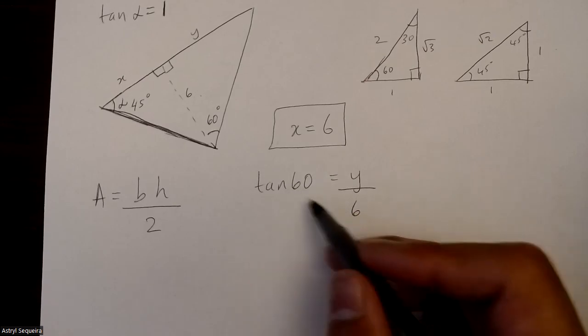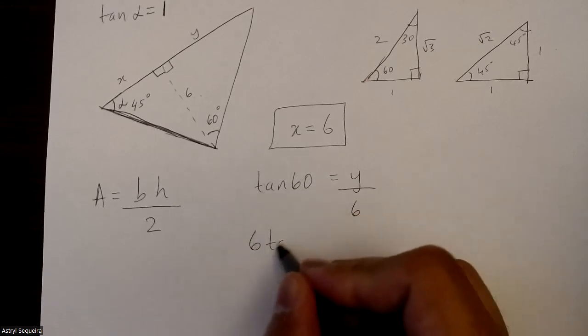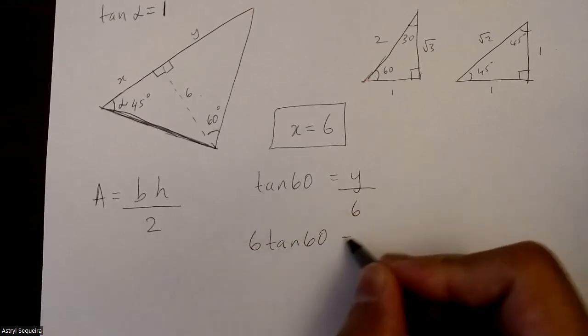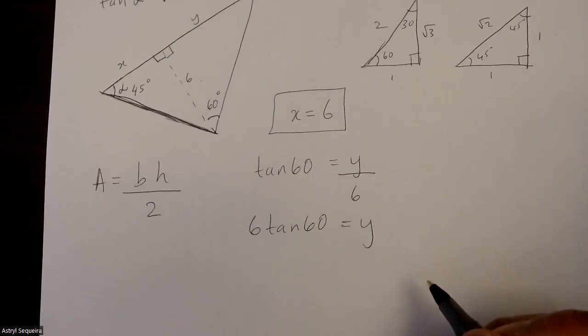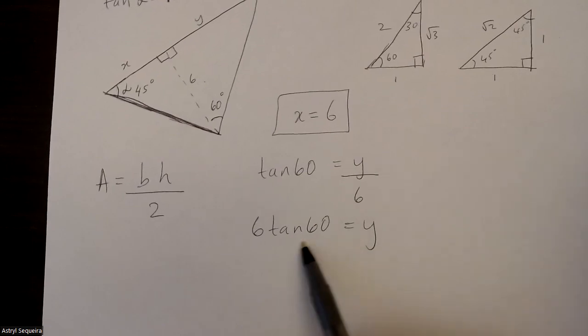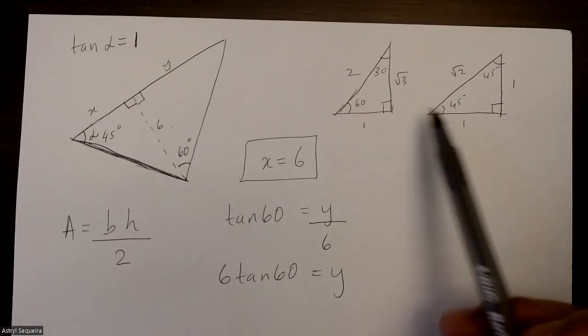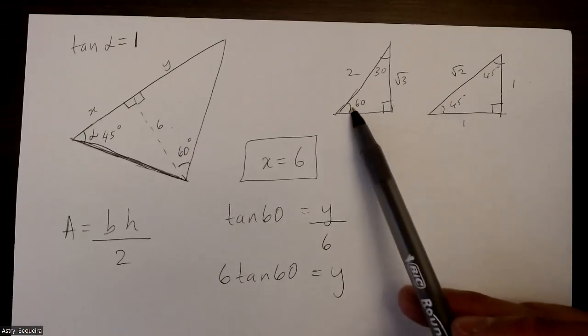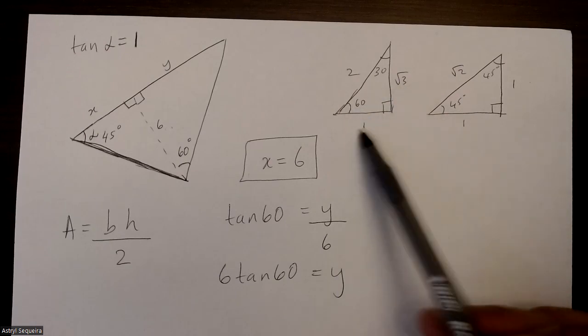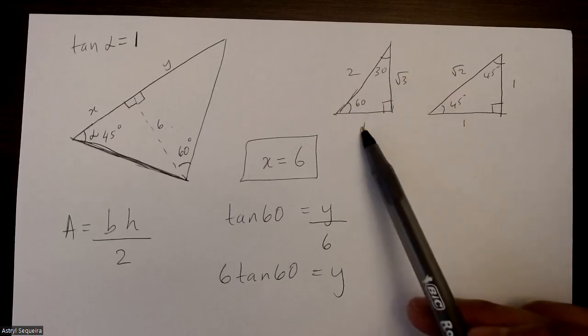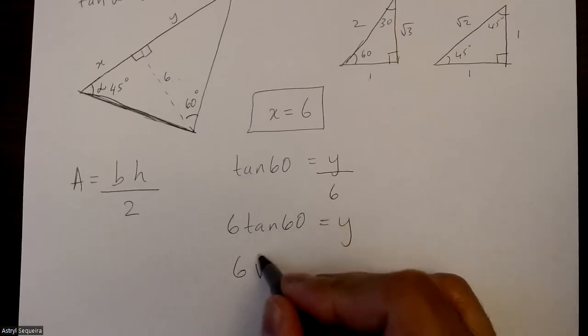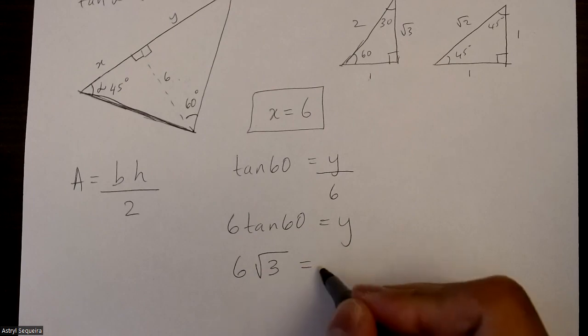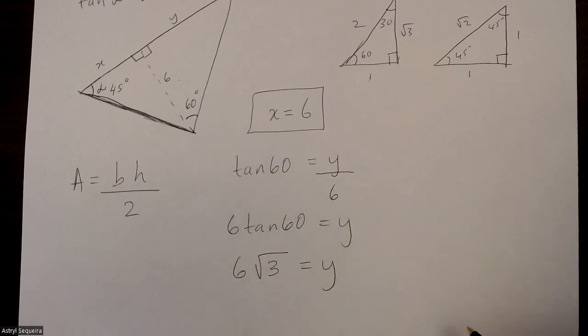Now I can cross multiply the six over, so 6 tan 60° equals y. So now I need to figure out what tan 60° is from my special triangles. Let's look at this special triangle here. I know tan 60° is just opposite over adjacent, which is √3 over 1, which is just √3. So I know that tan 60° is just √3 from my special triangle, and that is y, so y equals 6√3.